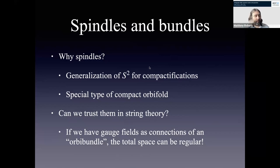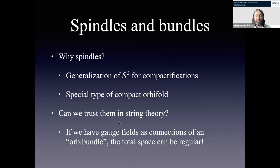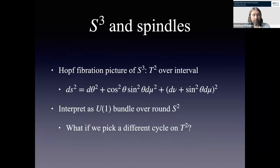The answer is that if this spindle can be interpreted as the base of some gauge bundle, and that gauge bundle plays nicely, then the total space of a gauge bundle over the spindle can in fact be regular. That's a little bit surprising. Let's go through a very simple example to see how this works.